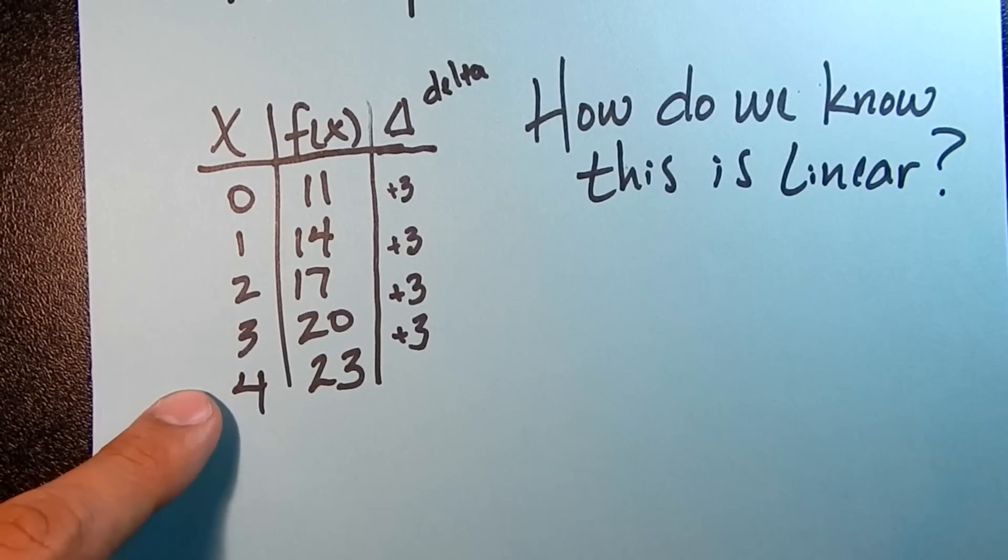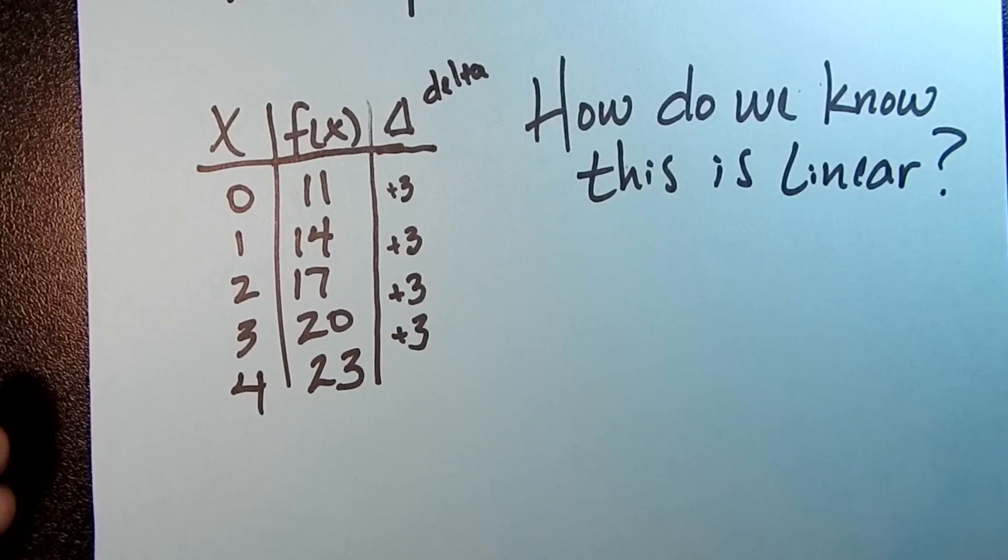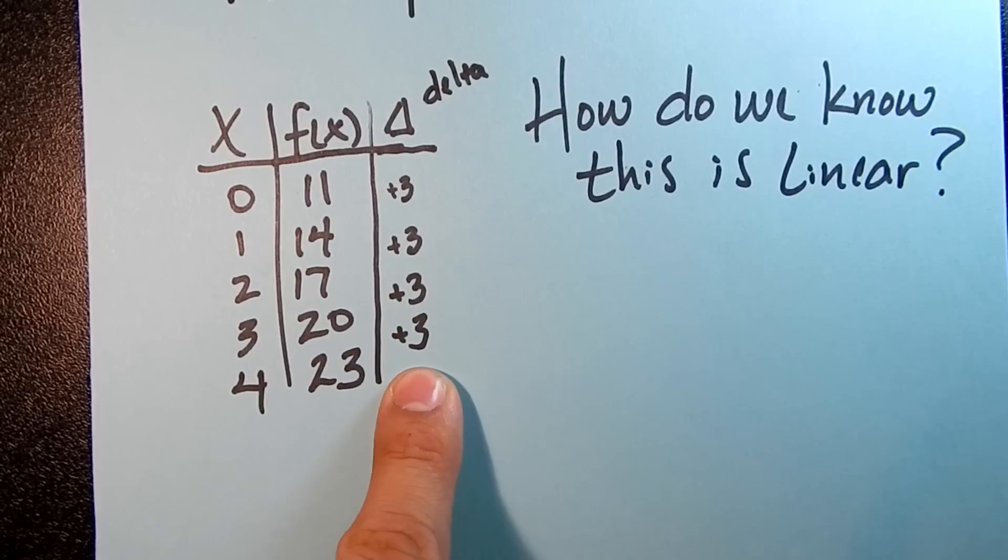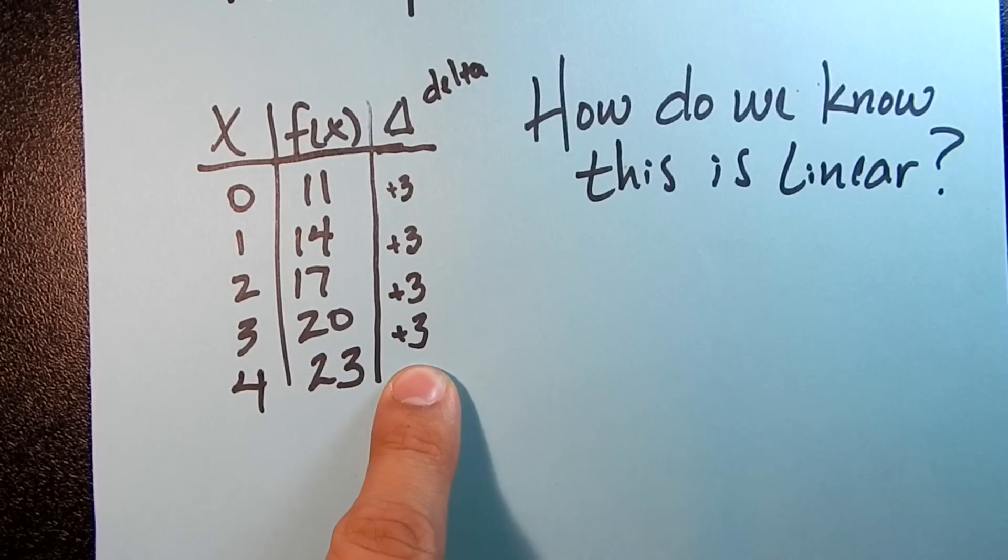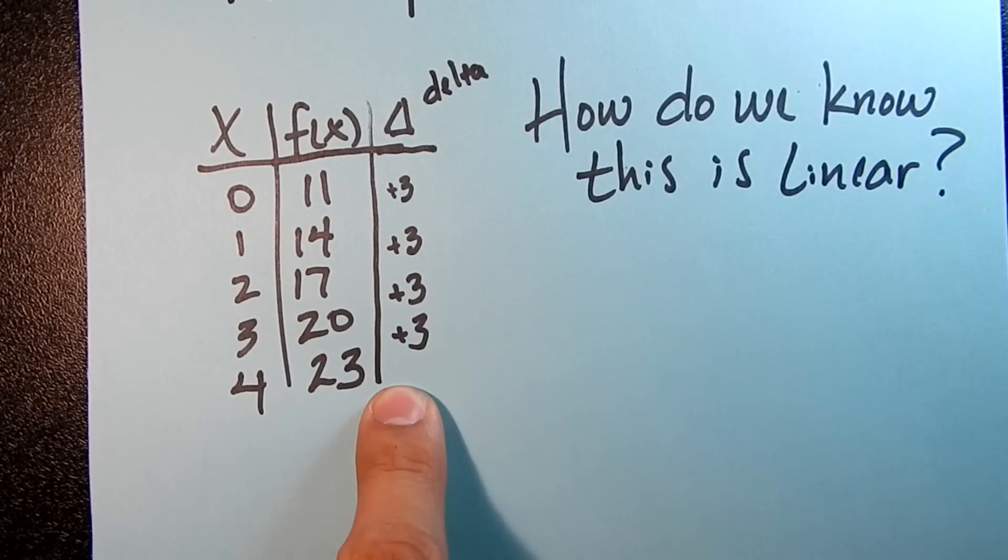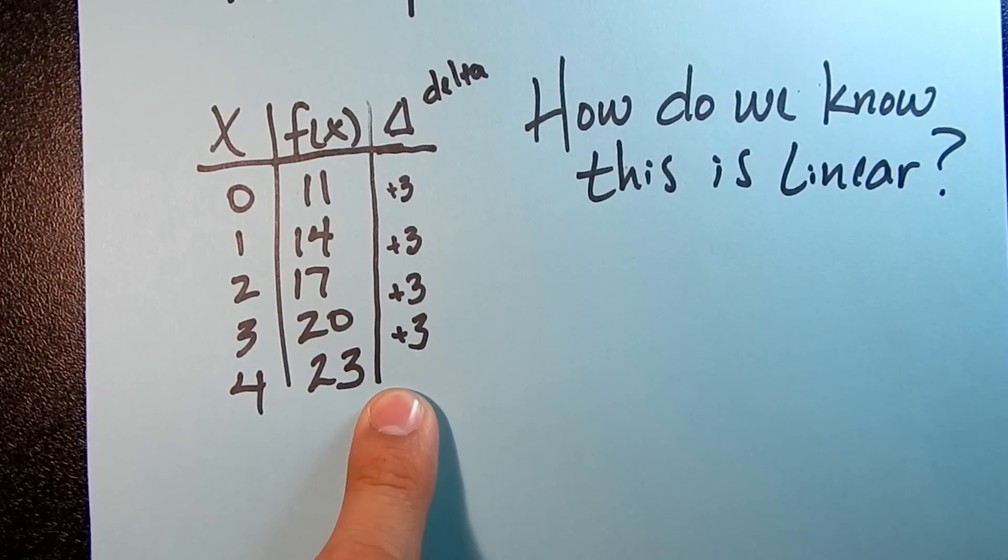And, in fact, if I graph this, and I find the slope of that line, the slope of this line is actually here. And that's going to help us in the next thing that we're doing. So the first thing we want to do is recognize, is this linear? So that's pretty easy. We look at this delta column, and we say, is it constant?